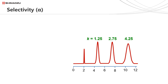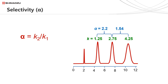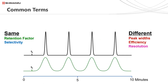Selectivity alpha is a measure of the difference in the interactions of two analytes with the stationary phase, and is a function of both the stationary phase and the mobile phase. Calculating the selectivity value between two peaks is simply a case of dividing the retention factor of the later eluting peak by the retention factor of the earlier eluting peak. For this example, the alpha value between peaks 1 and 2 is 2.2, and between 2 and 3 is 1.54. Retention factor and selectivity are only related to analyte retention time and not how wide the peaks are.